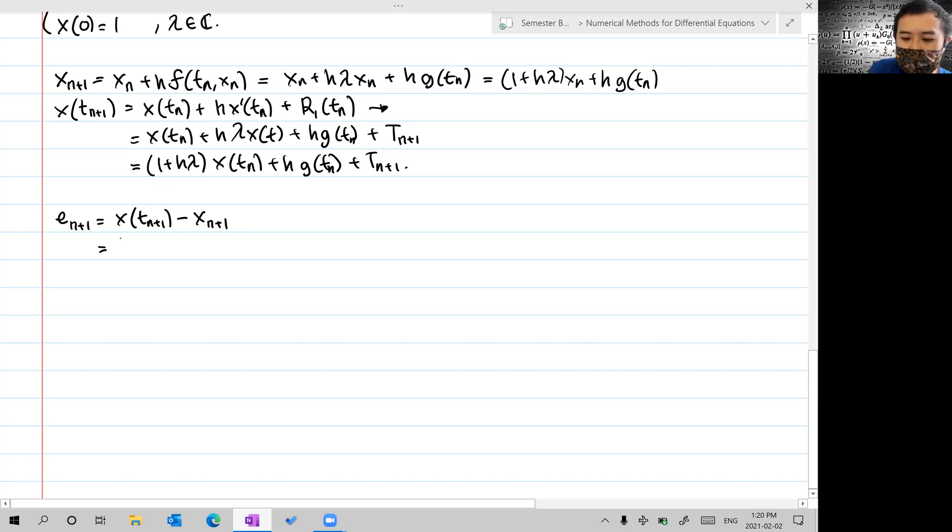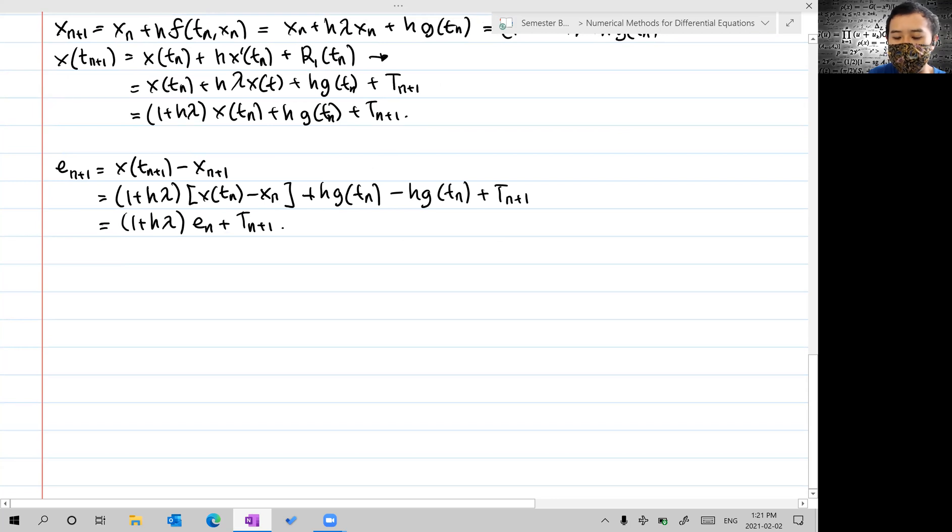We get (1 + hλ)[x(t_n) - x_n] minus h·g(t_n) plus h·g(t_n), and we still have the remainder term τ_{n+1}. So now we get e_{n+1} = (1 + hλ)e_n + τ_{n+1}. This could be a recursive formula.